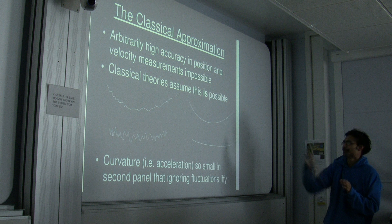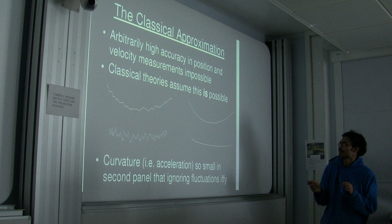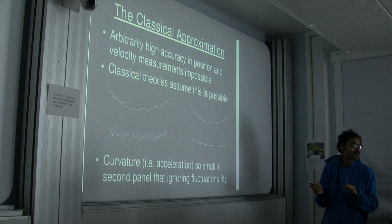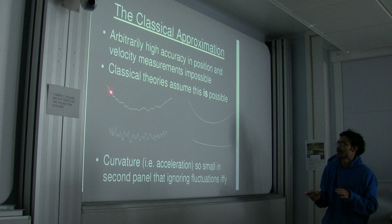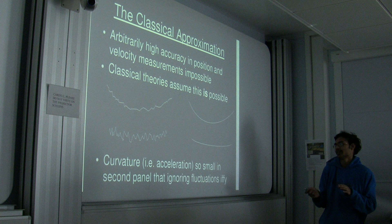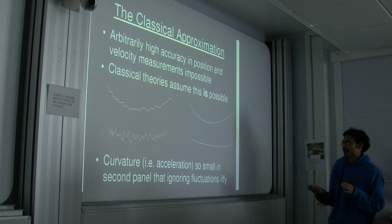Do we get deviations from Newtonian gravity because of quantum effects? Classical theories assume you can get positions and velocities arbitrarily accurately, but we can't actually do that. This is a schematic description of how spacetime might look if there was a mass there. Classically it looks perfectly smooth, but in reality it must look something like that. The idea is that quantum fluctuations, as a fraction of how much gravity there is, become more important if you have less gravity. When you have very little gravity, quantum effects might become important.